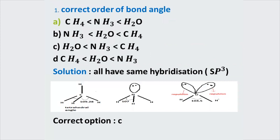Now let's arrange the correct order of bond angle for CH₄, NH₃, and H₂O. First, we check hybridization — all have the same hybridization, sp³. Then we check lone pairs: CH₄ has no lone pairs, NH₃ has one lone pair, and H₂O has two lone pairs. Higher the number of lone pairs, lower the bond angle. So H₂O has the lowest bond angle, then NH₃, then CH₄ which has the highest. The correct option is C.